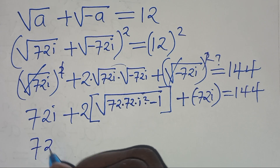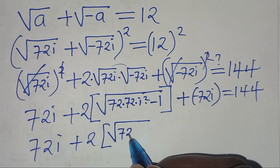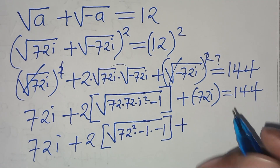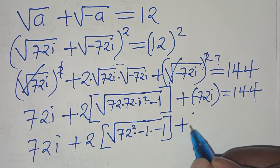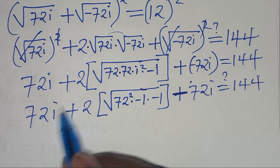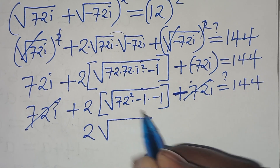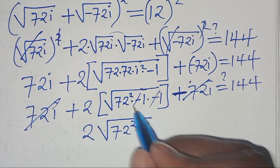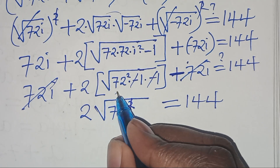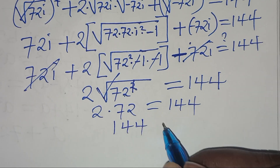Simplifying: 72i − 72i + 2·72 = 144. The imaginary terms cancel, leaving 2 × 72 = 144, which equals 144. So the left-hand side equals the right-hand side, confirming that a₁ = 72i satisfies the equation.